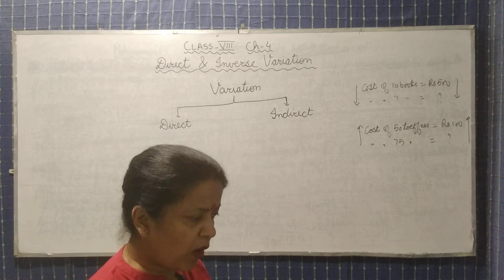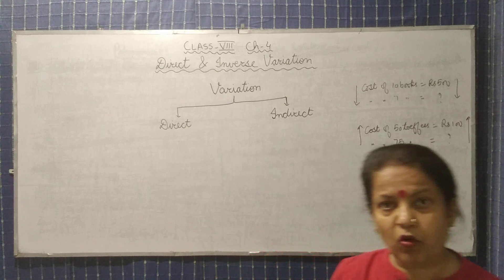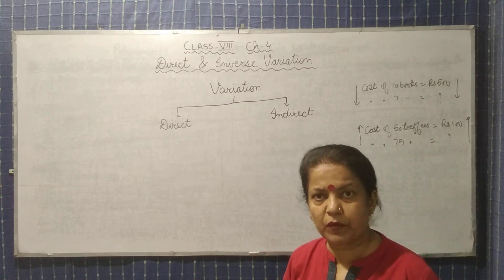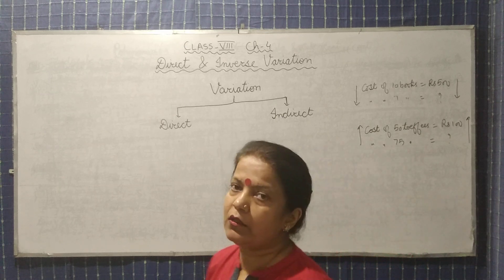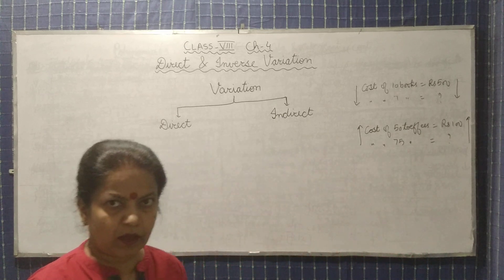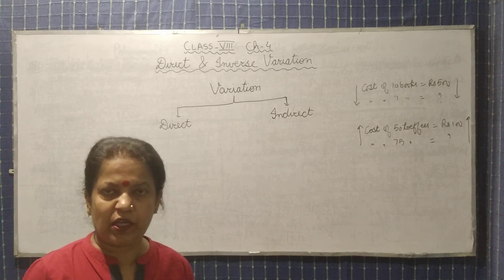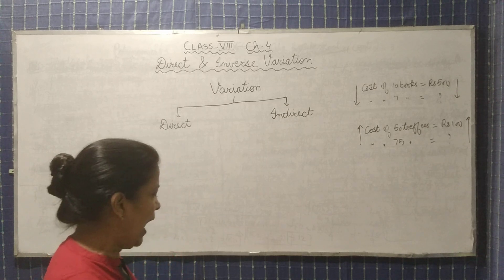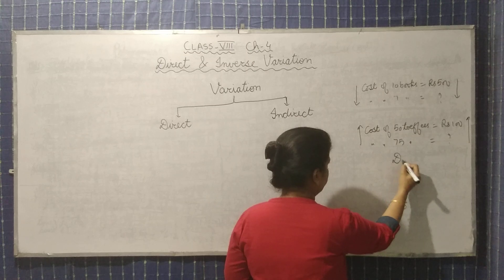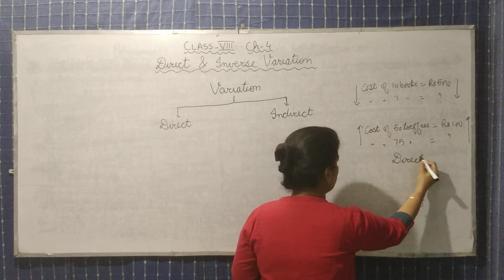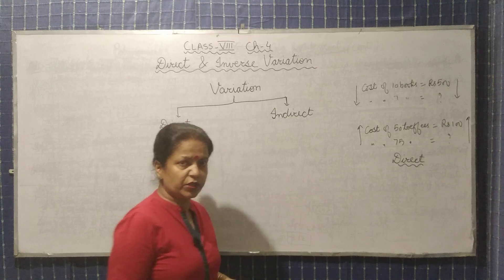So if one quantity increases, the other quantity also increases. Or if one quantity decreases, then the other quantity is also decreasing. Such a type of variation is called as direct variation.